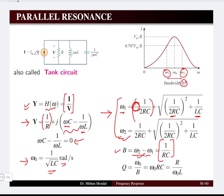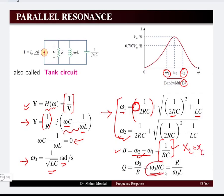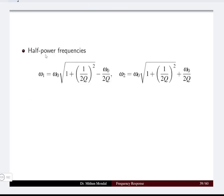We can find the bandwidth from the frequency point of view or from the components connected to the parallel RLC network. The quality factor of the circuit is defined as resonant frequency divided by bandwidth, which equals ω0RC for this case. Since at resonance XL equals XC, we can write ω0RC or equivalently R divided by ω0L for the quality factor of the network.